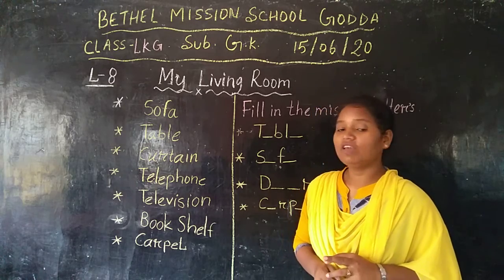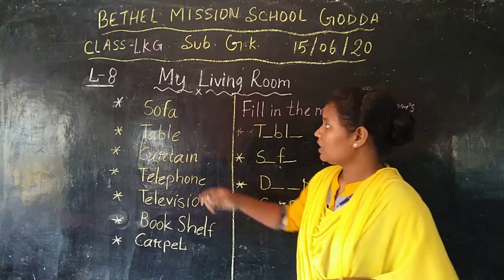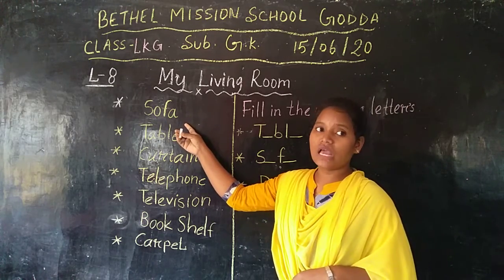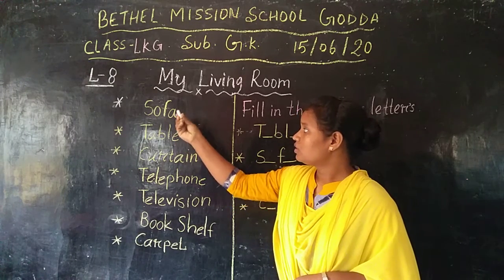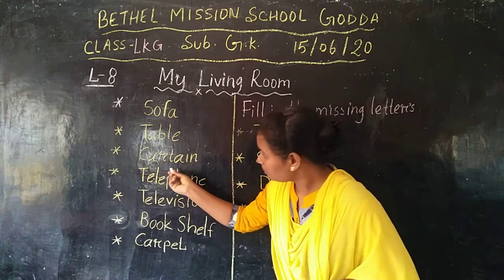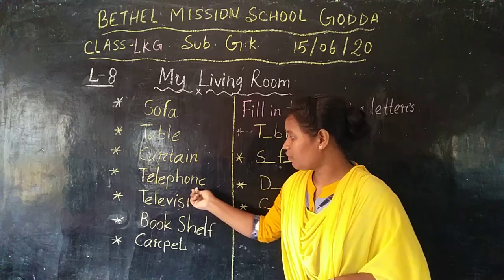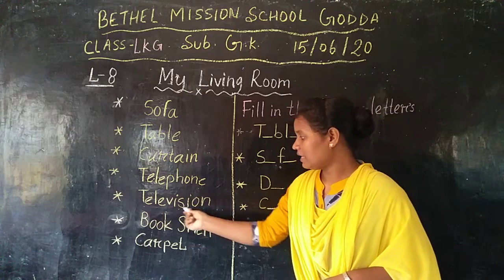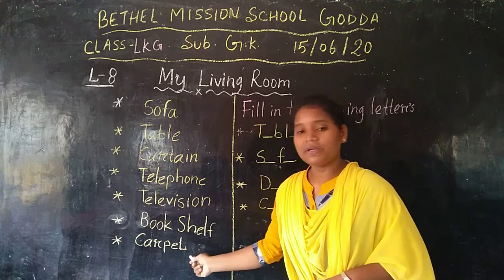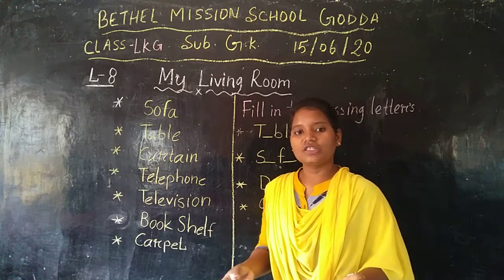In the common room we keep many things. Here are some of the names I have written down: sofa, table, curtain, telephone, television, bookshelf, carpet — and there are many more things.